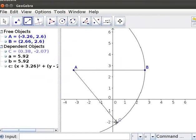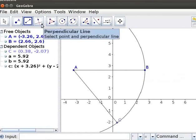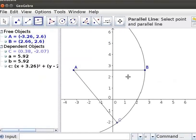Let us now construct a Parallel Line to Segment AB which passes through Point C. To do this, select the Parallel Line Tool from the Toolbar. Click on the Point C and then on Segment AB.